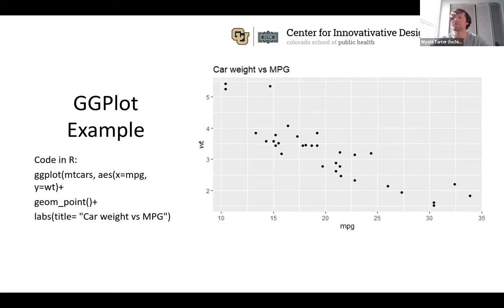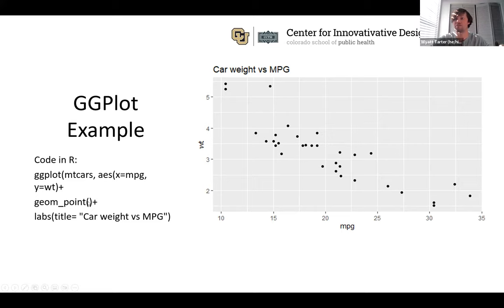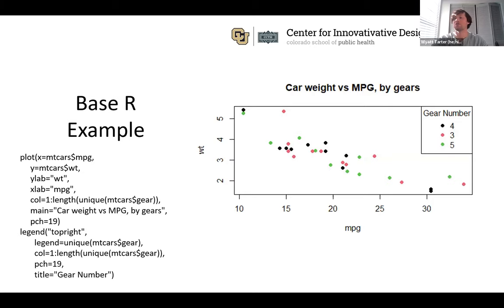A ggplot example: we use the `ggplot()` call with the mtcars dataset, then specify x and y in the `aes()` call — similar to base R but with that extra `aes()` step. Then the important part: the `+` operator. The ggplot call loads your data but doesn't do anything with it. You add on `geom_point()` to make points, then `+ labs()` for a title. The result already looks cleaner than base R.